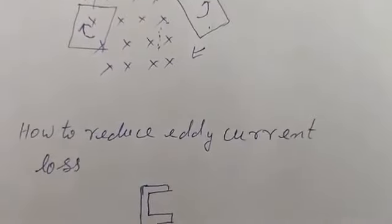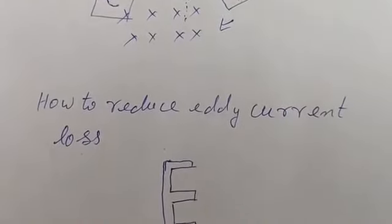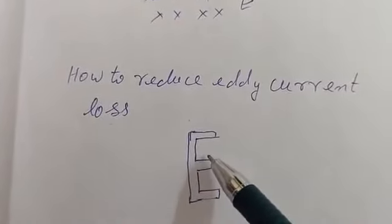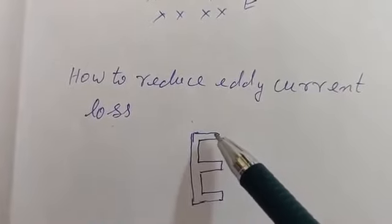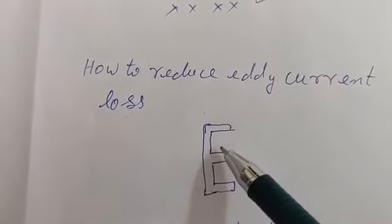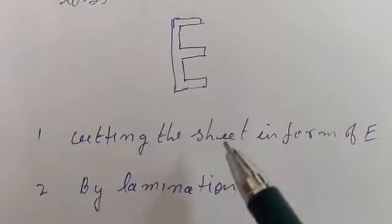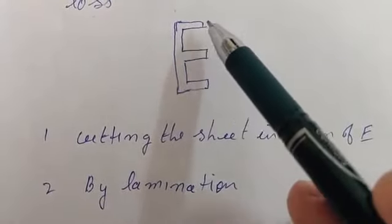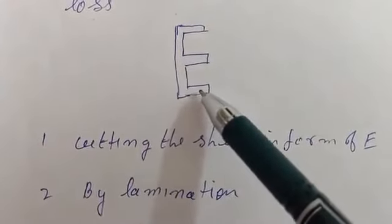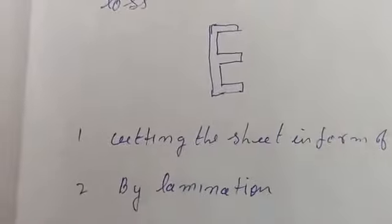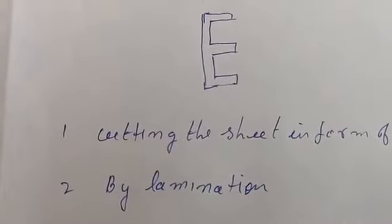Now, how can we reduce eddy current losses? If we cut this sheet in the form of an E-shape, loops will not be formed and the thickness should also be very small. By cutting the sheet in the form of E and then laminating those sheets, we can reduce the eddy current effect.